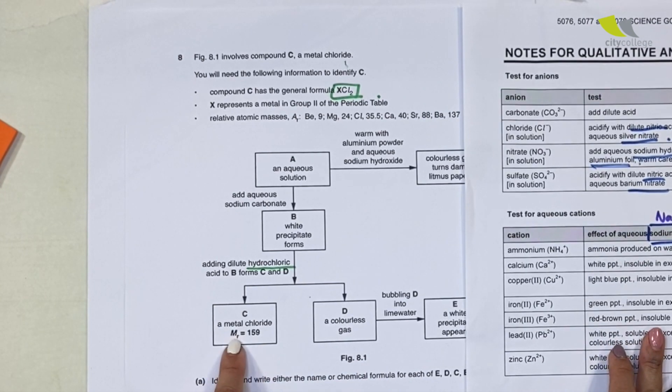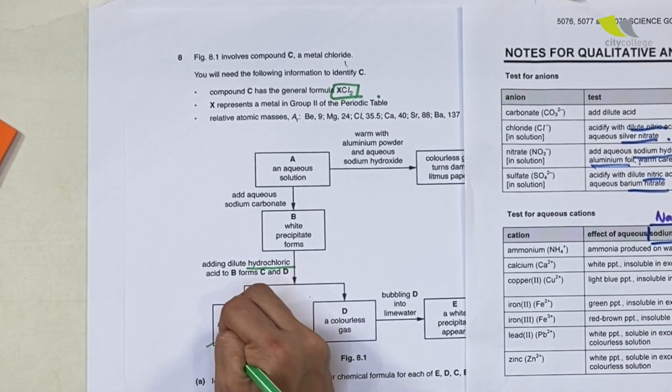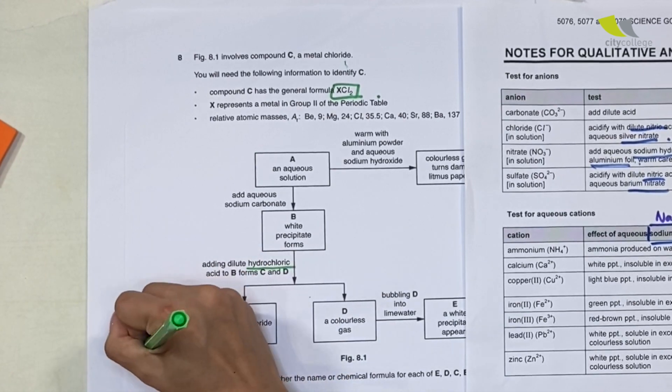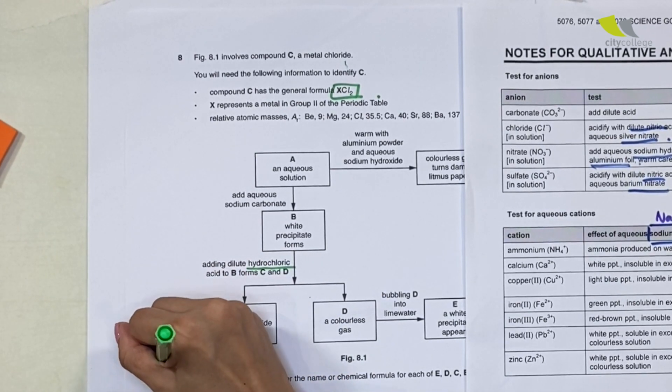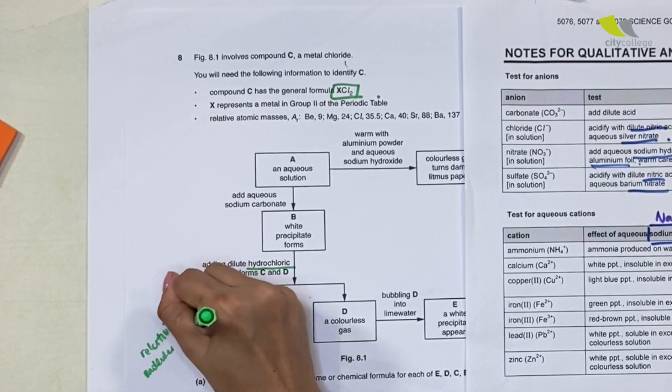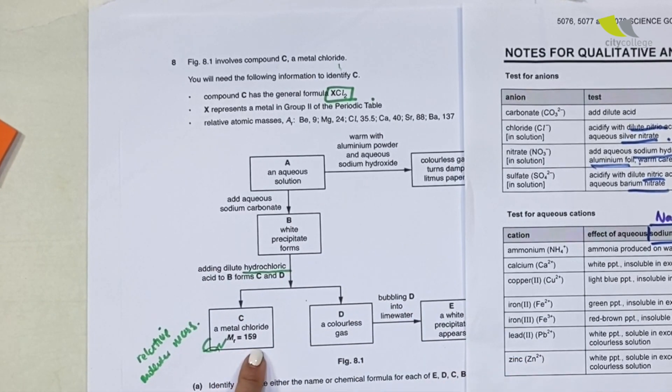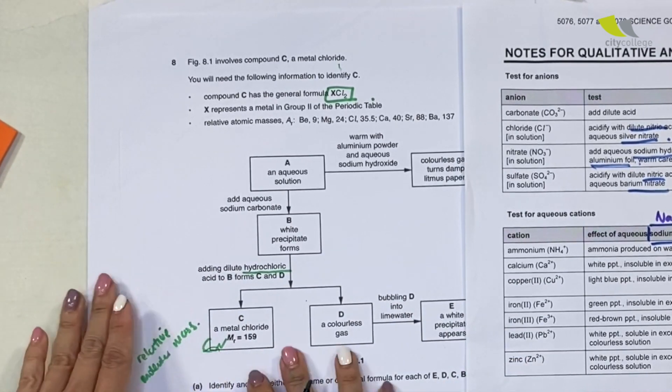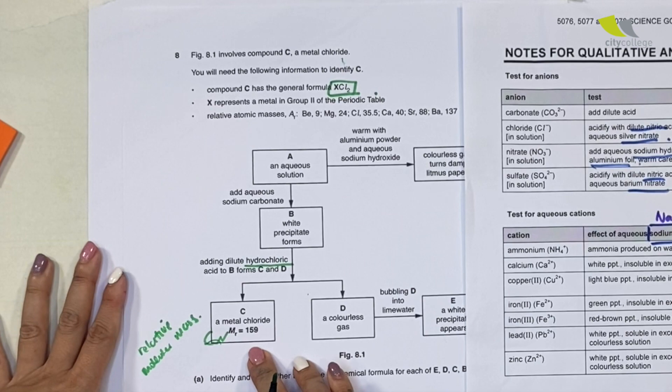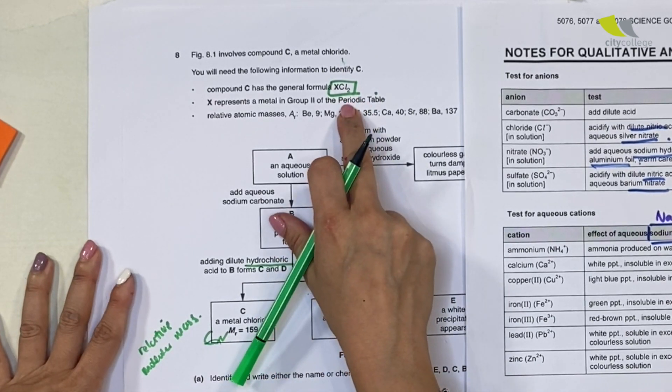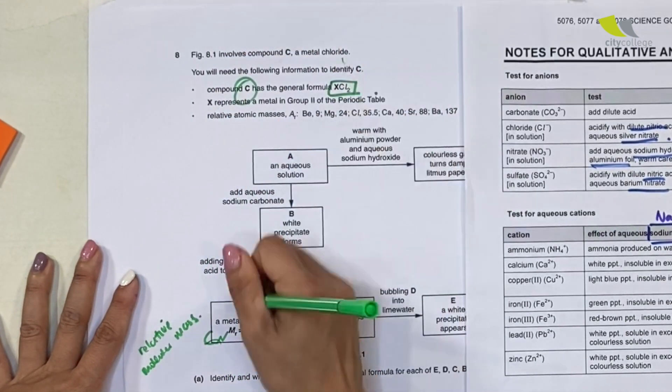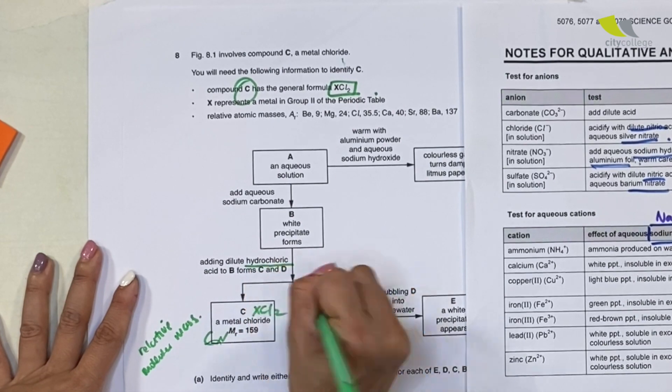They gave you Mr—what does Mr represent? Mr is your relative molecular mass, and it's 159. Can I calculate something? Yes, because I've already been given that C has a formula of XCl2. With this, it seems I can find out who is my unknown X.